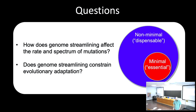An audience member asks whether the minimal cell might actually have a growth advantage due to lacking so many genes. The speaker responds that he doesn't want to give away the punchline just yet, but acknowledges it's a good question. Maybe an organism is constrained through genome streamlining, but with less material there could also be fewer random protein interactions, potentially opening opportunities for adaptive evolution. That alternative explanation was actually raised in the review process of this work.